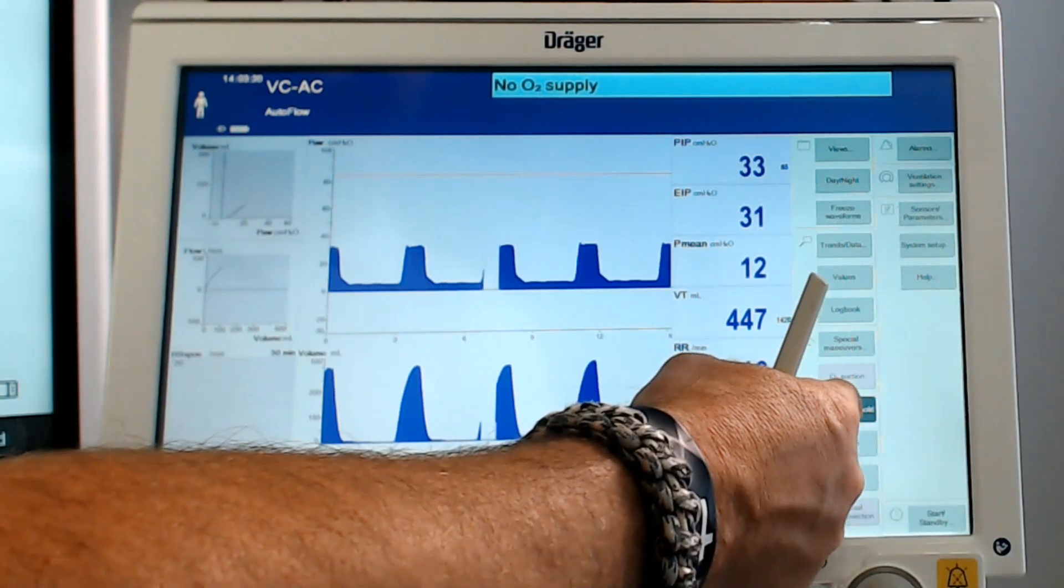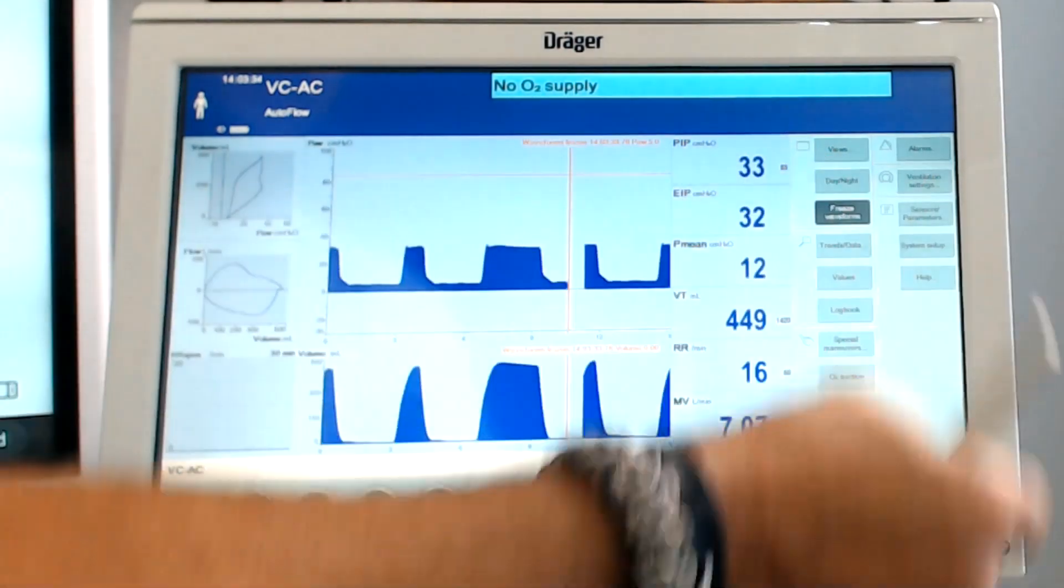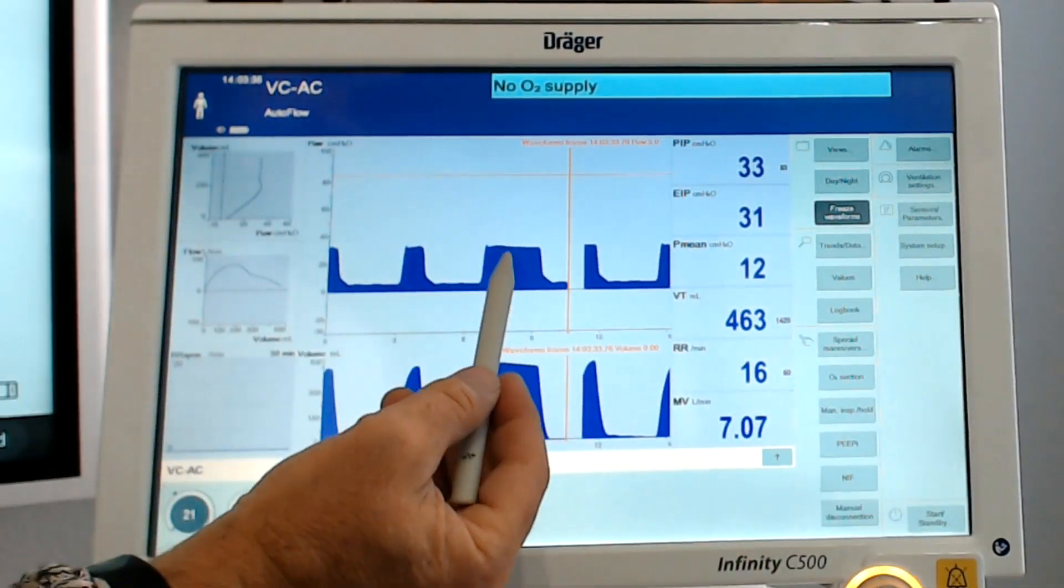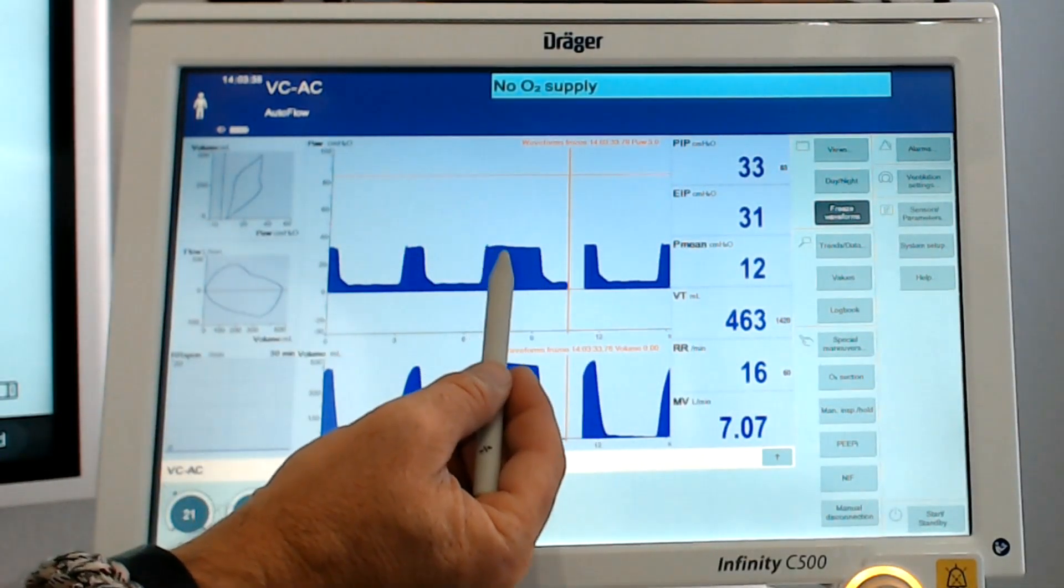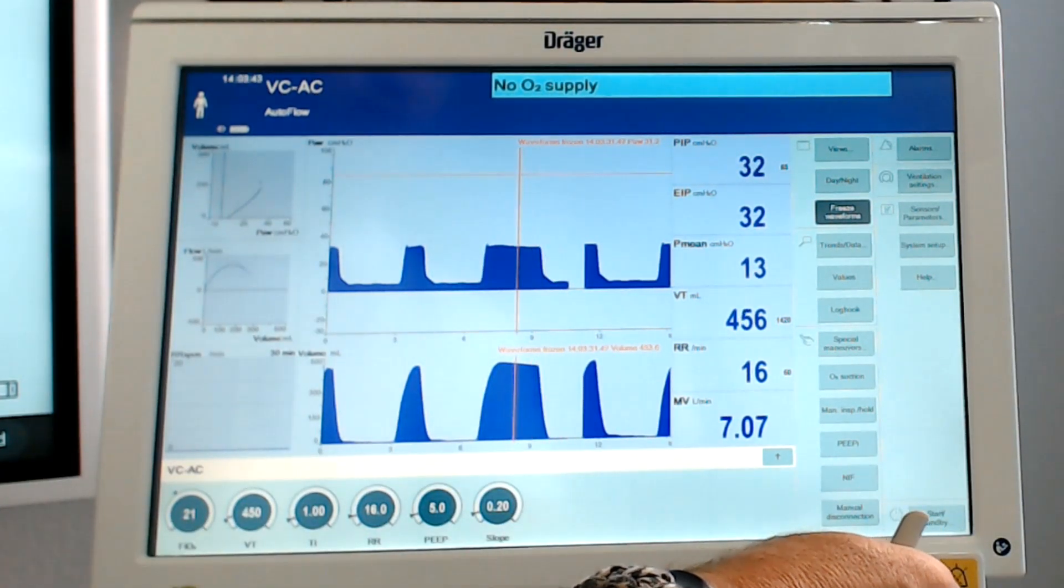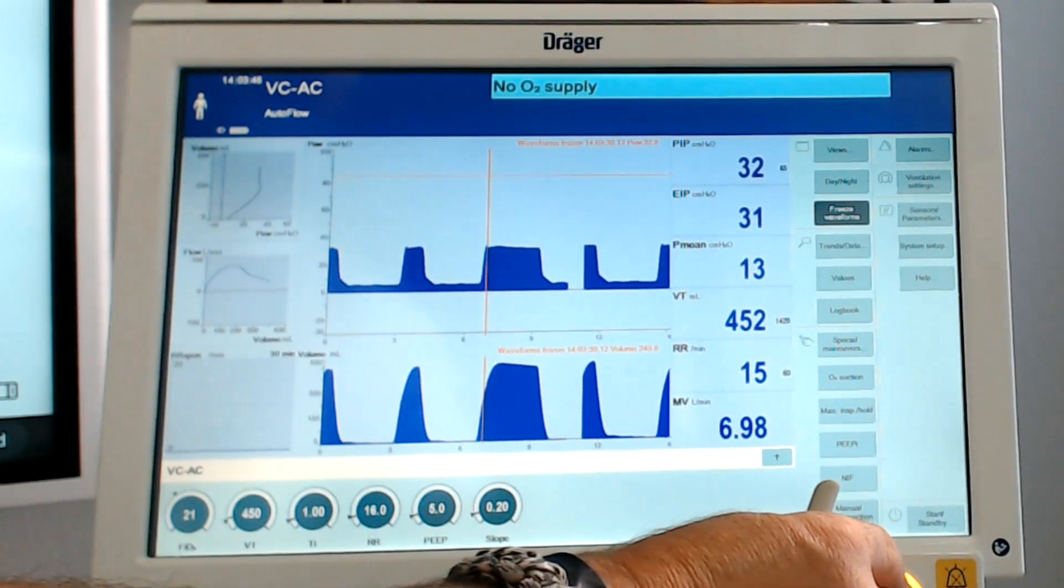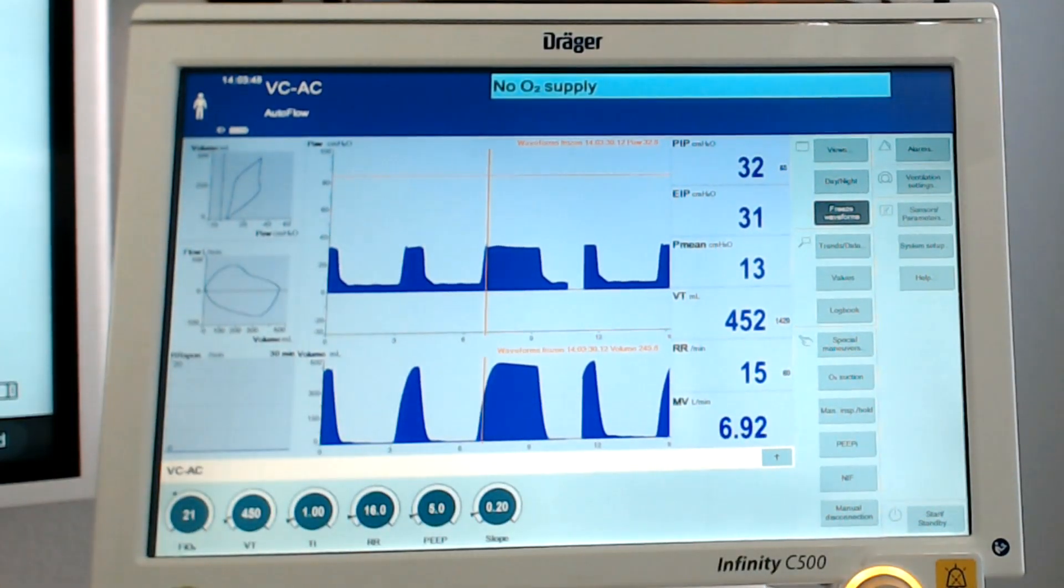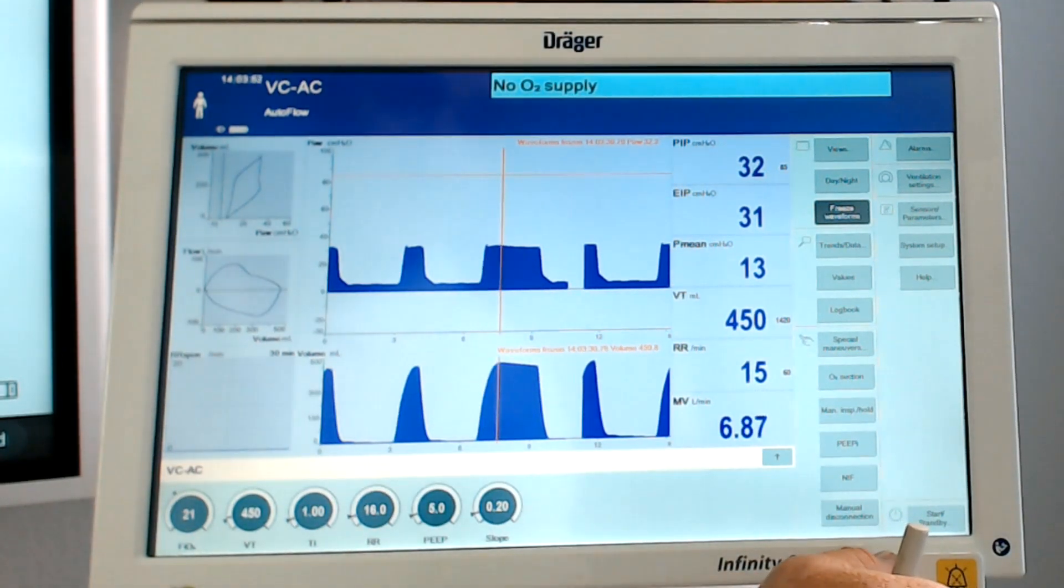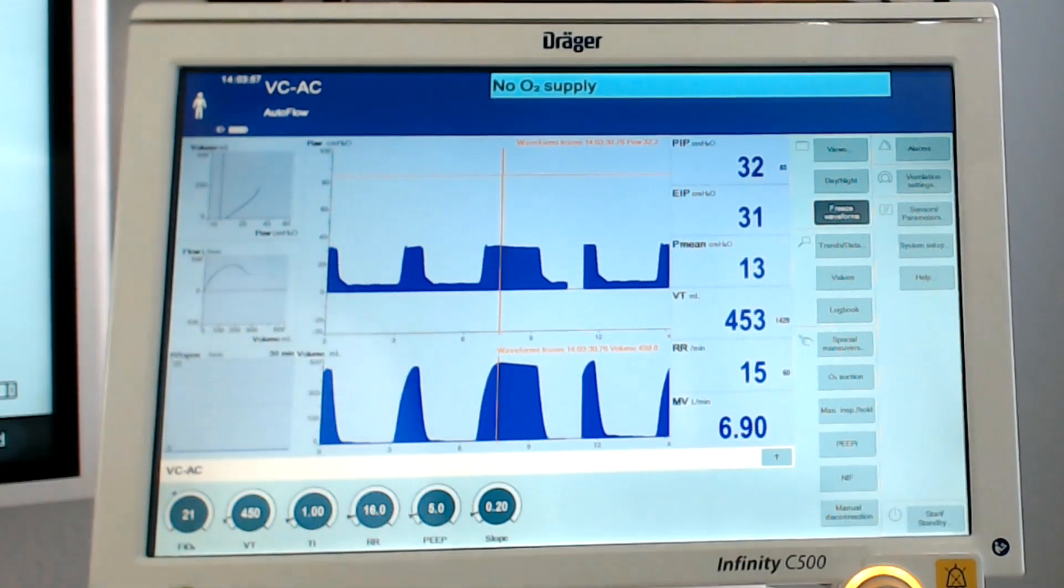So now we're going to do an inspiratory hold. We're getting back our 450. Now we're doing an inspiratory hold. Look what just happened. Square waveform, inspiratory hold, no significant drop. Look at that. Basically your plateau is now 31 and your peak inspiratory pressure is 32, 32, 31. When we come over here and look at the volume delivered, we see 459. Perfect.